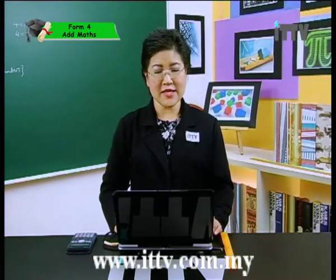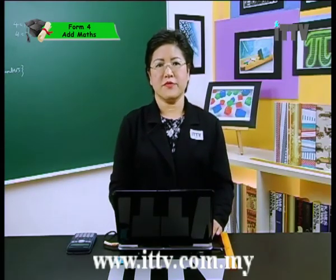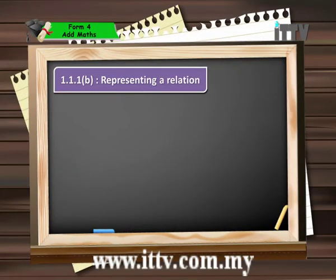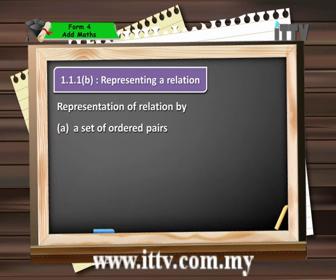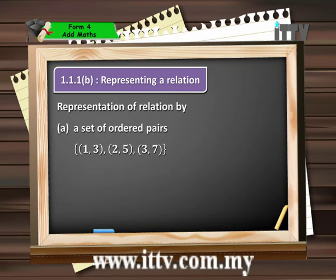Now that we've understood what a set is and how to write one, let's explore relations. A relation can be represented by any one of three ways: firstly, a set of ordered pairs; secondly, a graph; or thirdly, an arrow diagram. In a set of ordered pairs, we list the ordered pairs within brackets, and each bracket is considered an element, so it should be written in a pair of curly braces separated by commas. For example: {(1,3), (2,5), (3,7)}.